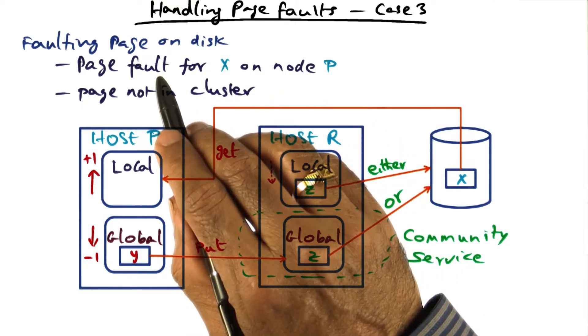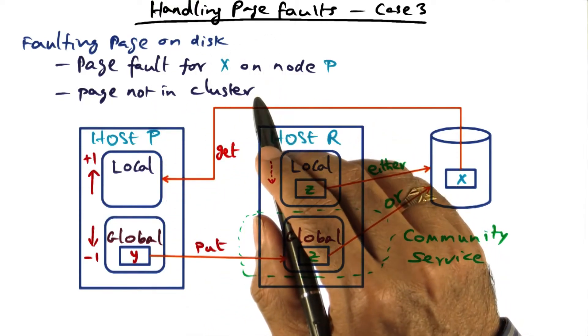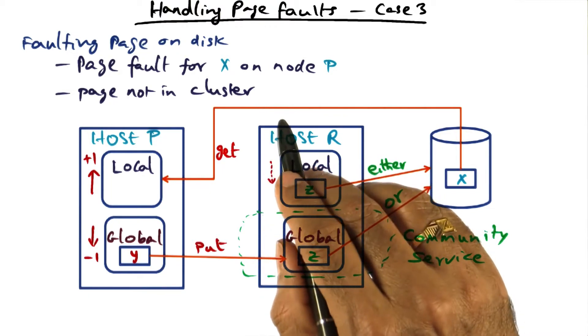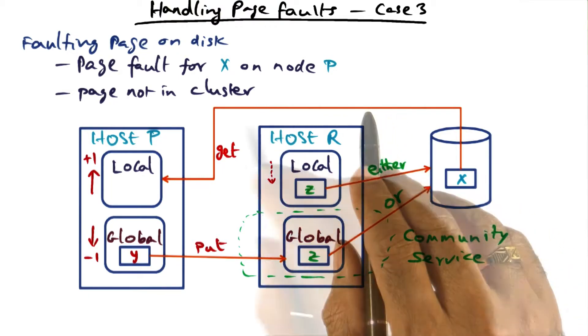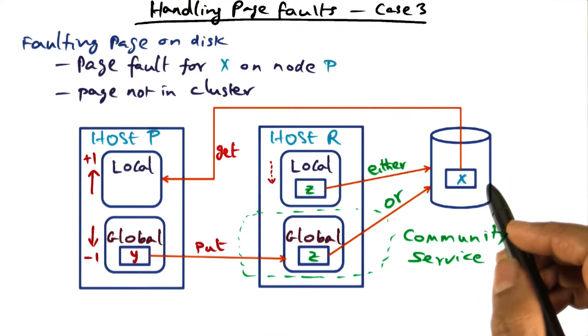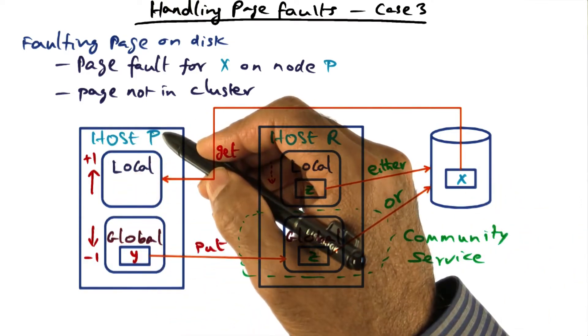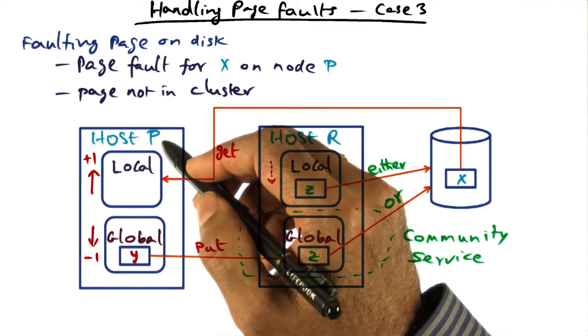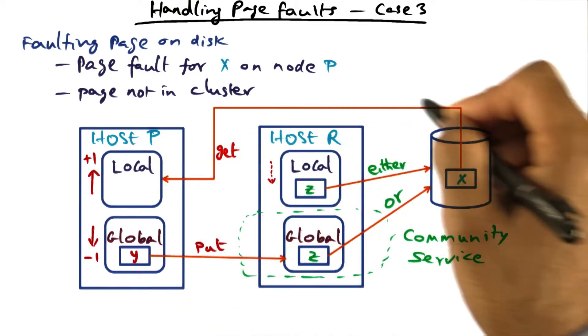The third case is where the faulting page is not available in the cluster memories at all. In other words, the only copy exists on the disk. So in this case, when we have the page fault on node P for this x, we have to go to the disk to fetch it.